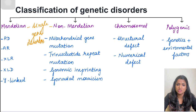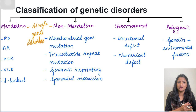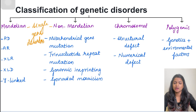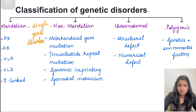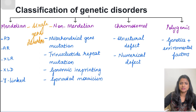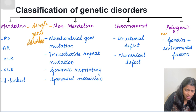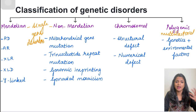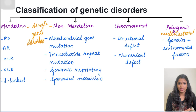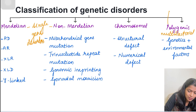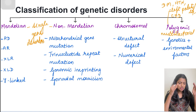In chromosomal disorders, the chromosome number can be altered or the chromosome structure can be defective, affecting either autosomes or sex chromosomes. Polygenic inheritance is multifactorial, meaning both genetic and environmental factors affect the pattern. Many diseases fall under this category — examples include diabetes mellitus, hypertension, cleft palate, cleft lip, and congenital heart disease.